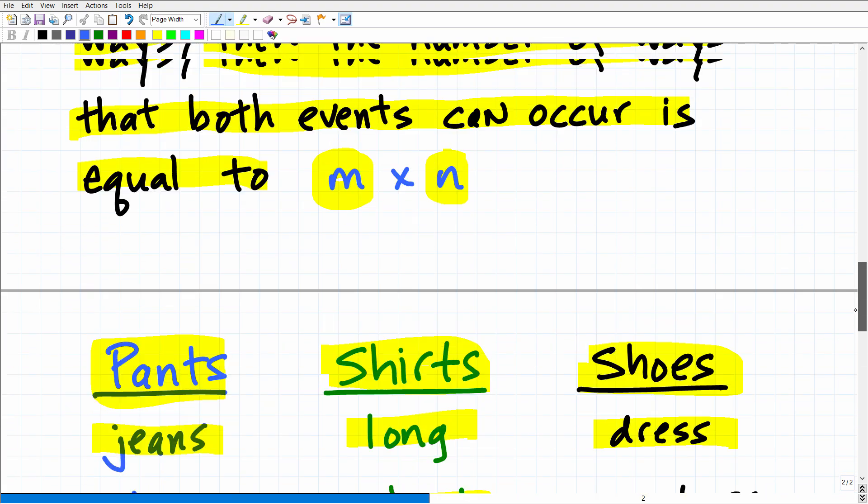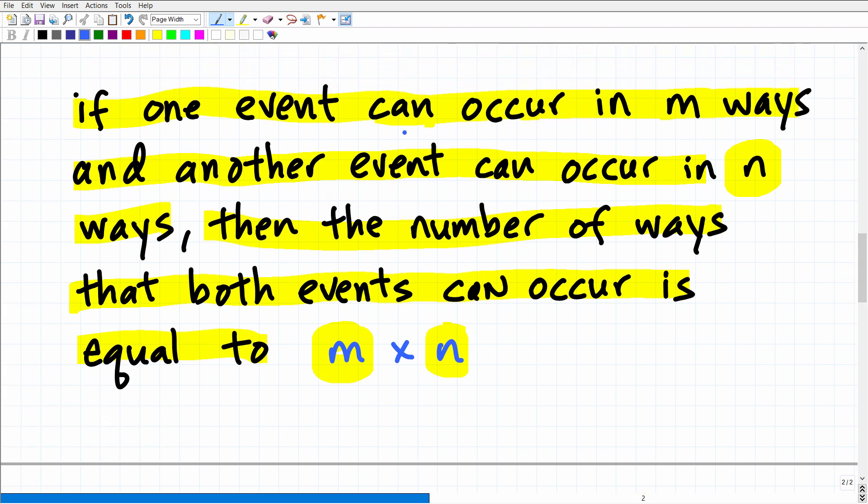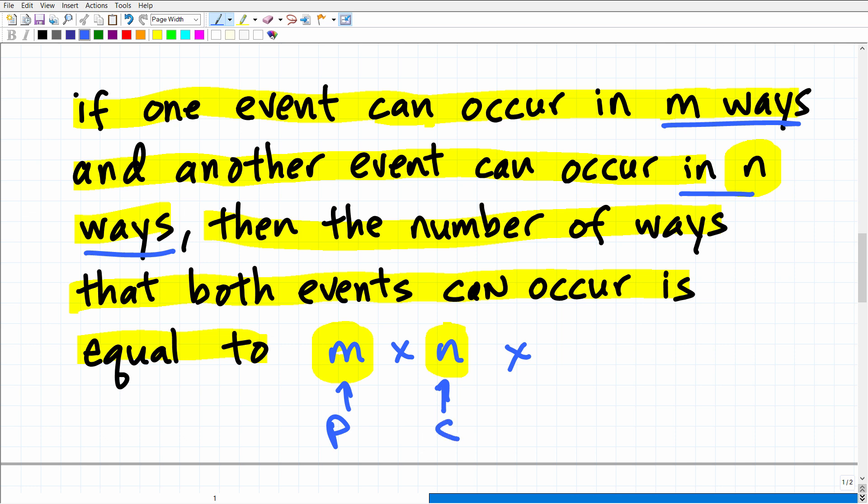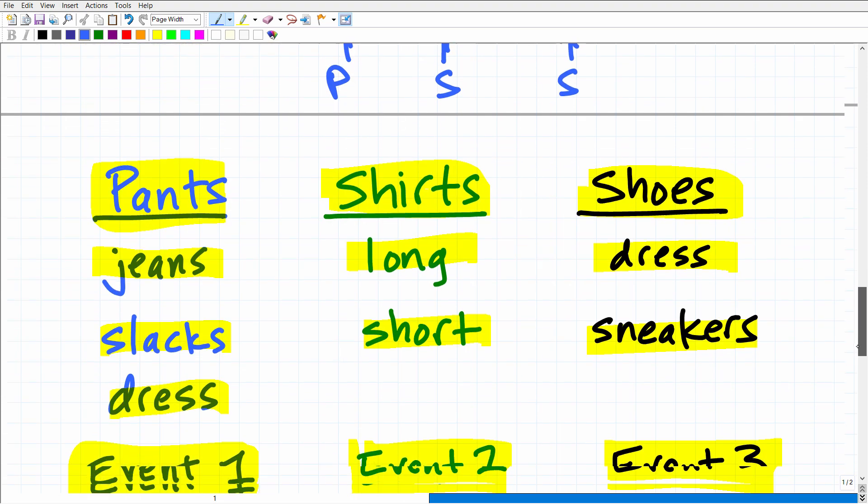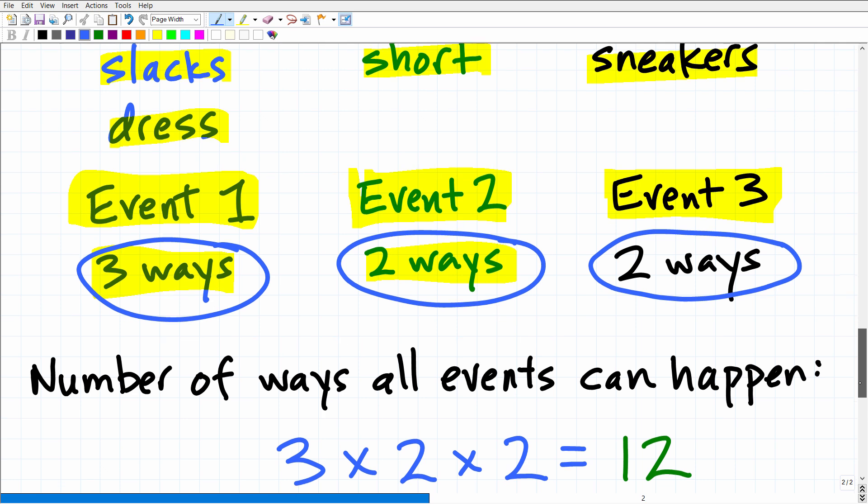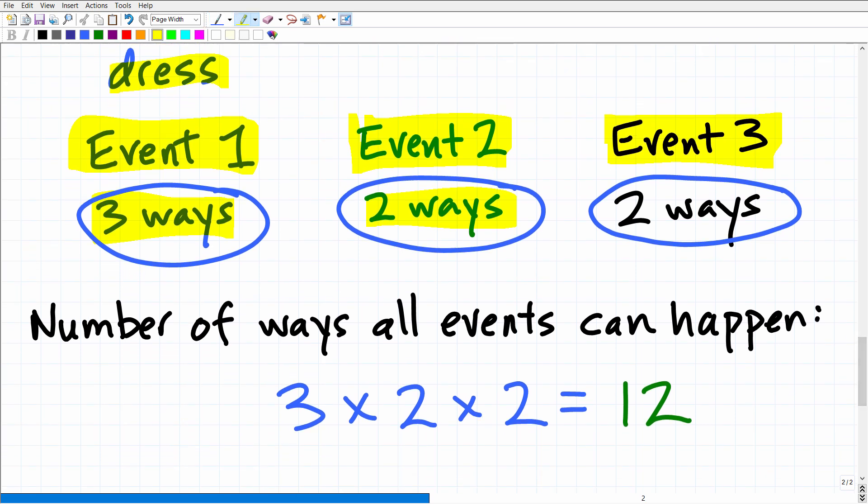Now, the fundamental counting principle here, by the definition, it says if one event can occur in M ways and another in N ways, well, this can keep going on and on and on. And then a third event can occur in Z ways. You basically just keep multiplying. And these are events. This is like selecting pants. This would be like selecting shirts. This would be selecting shoes, and so forth. This is the justification that I was looking for to kind of support your answer. The number of ways all these events can happen, i.e., the total number of outfits you could create is simply 3 times 2 times 2, which, of course, 6 times 2 is 12.